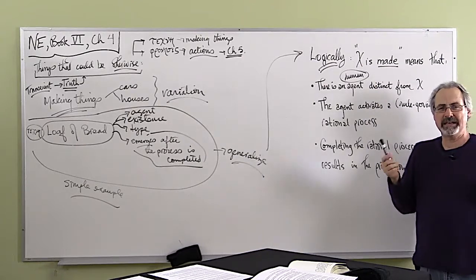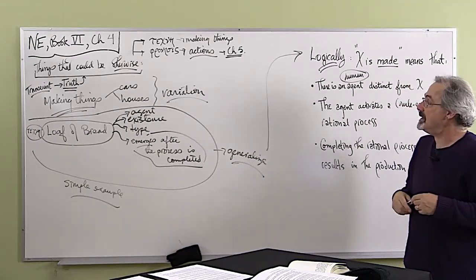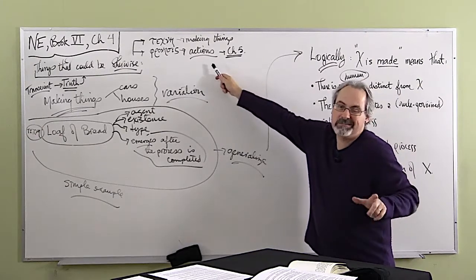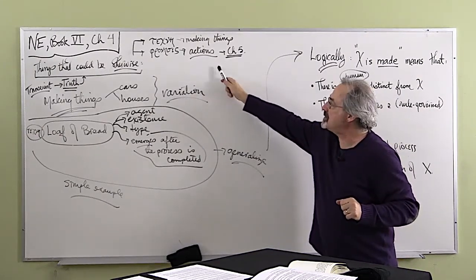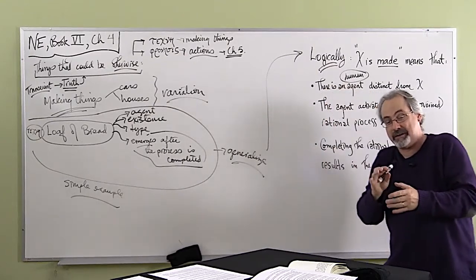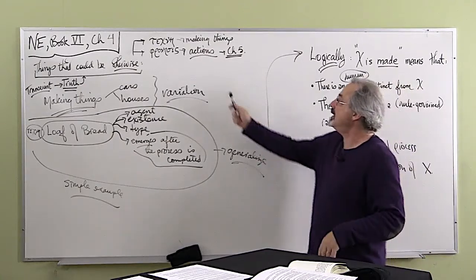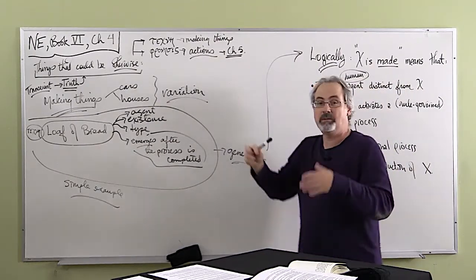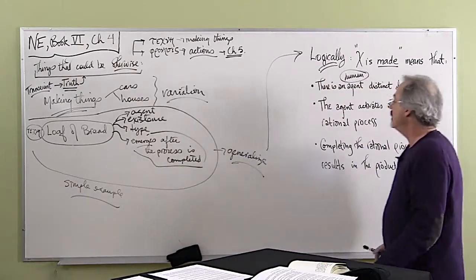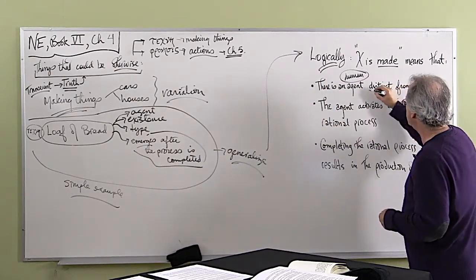So there's an agent distinct from whatever is being made. Now you might think, well, isn't that in all cases? No, it's not. As a matter of fact, when things in actions, just to give you a little bit of foreshadowing, actions really are going to be when the ends are actually part of the sort of the agent. So there's a much closer link here. Here, making things is really when the thing that's made is external. So there's an agent distinct from X.